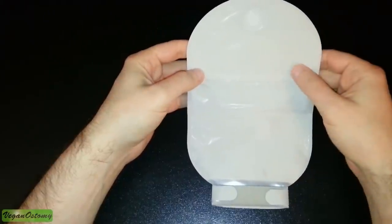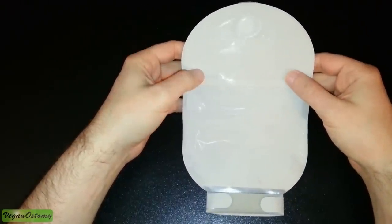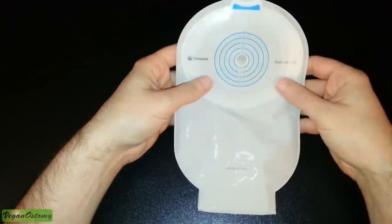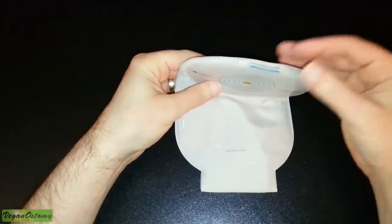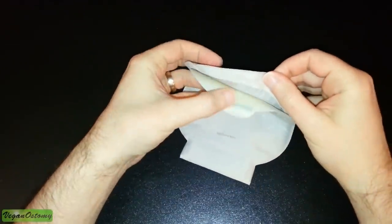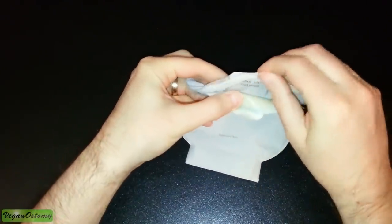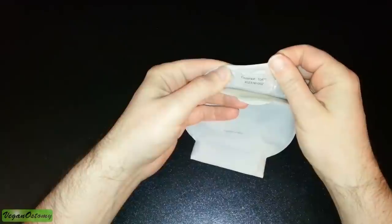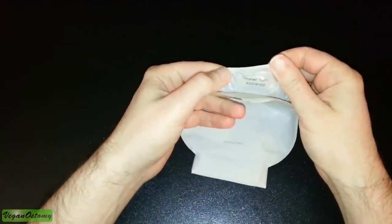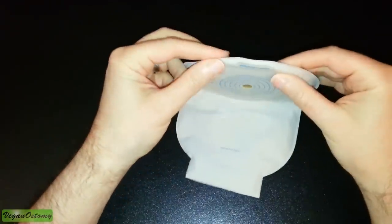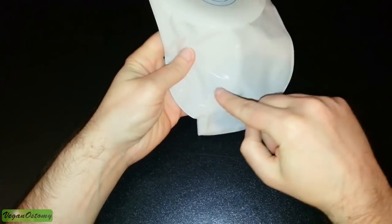Another neat thing that I think you really have to be an ostomate to appreciate is just little things like this. Coloplast decided to put the product number, and there's also a lot number under there, in a very convenient place.